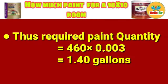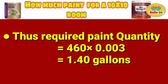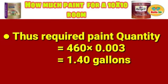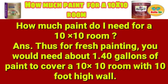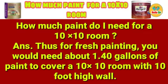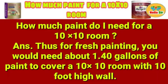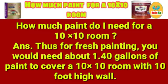The required paint quantity equals 460 × 0.003 = 1.40 gallons. So, how much paint do you need for a 10 by 10 room? The answer is you would need about 1.40 gallons of paint to cover a 10 by 10 room with 10-foot high walls.